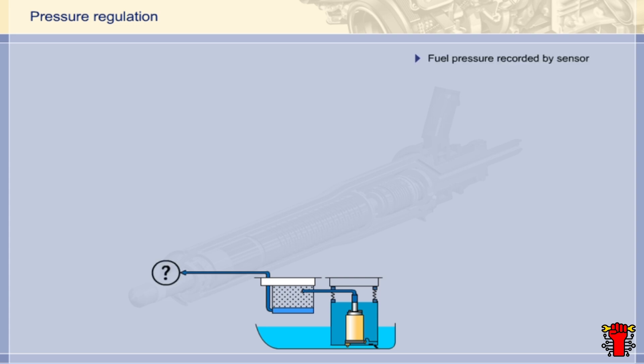On the direct injection engine, the fuel pressure on the low-pressure side is not controlled by a pressure-regulating valve, but is instead recorded by a special sensor. Specifically, the fuel pressure sensor located in the feed line downstream of the filter.